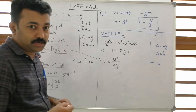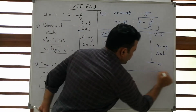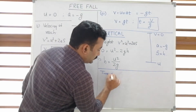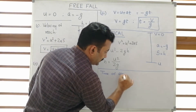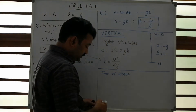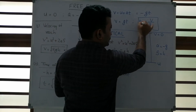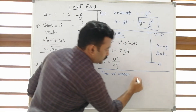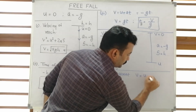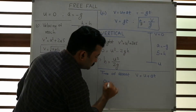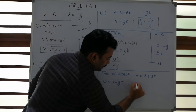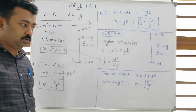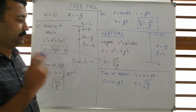We also need the time taken by the particle to ascend — the time of ascending. Using v = u + at, with v = 0: 0 = u minus gt, so the time of ascent is t = u/g. This also equals the time of descending.